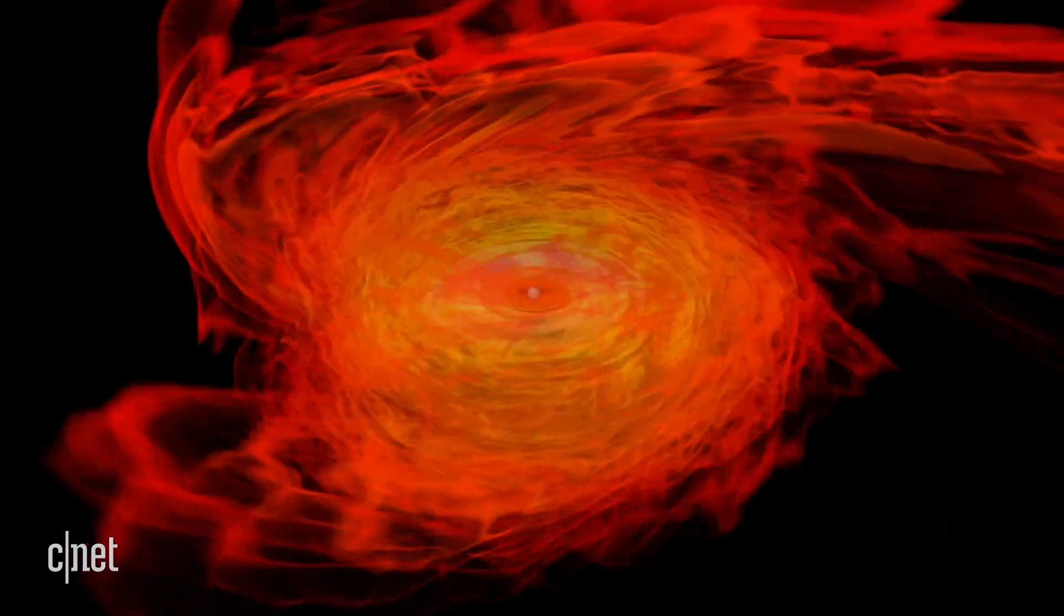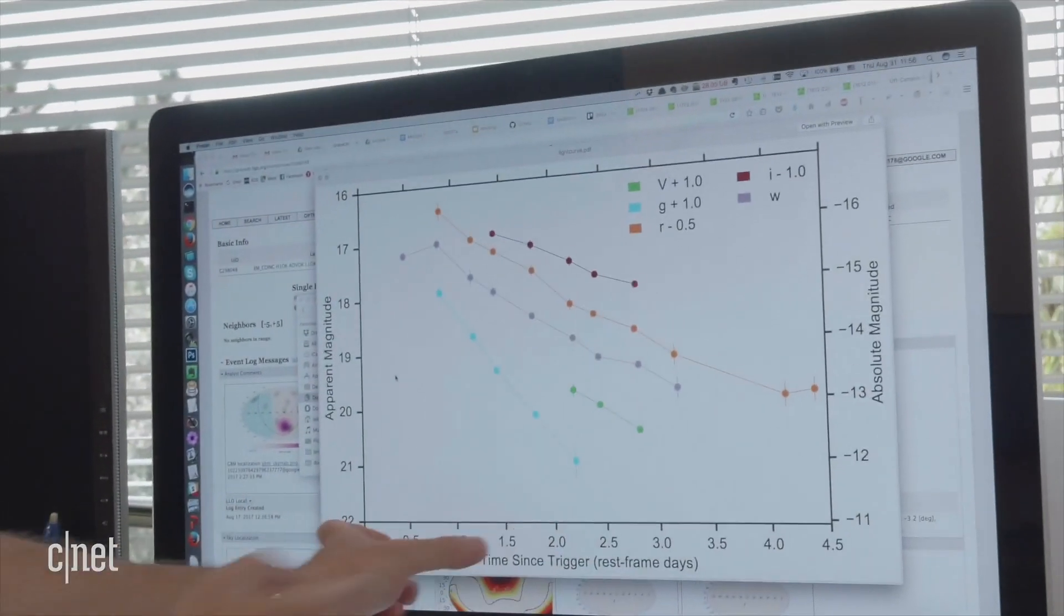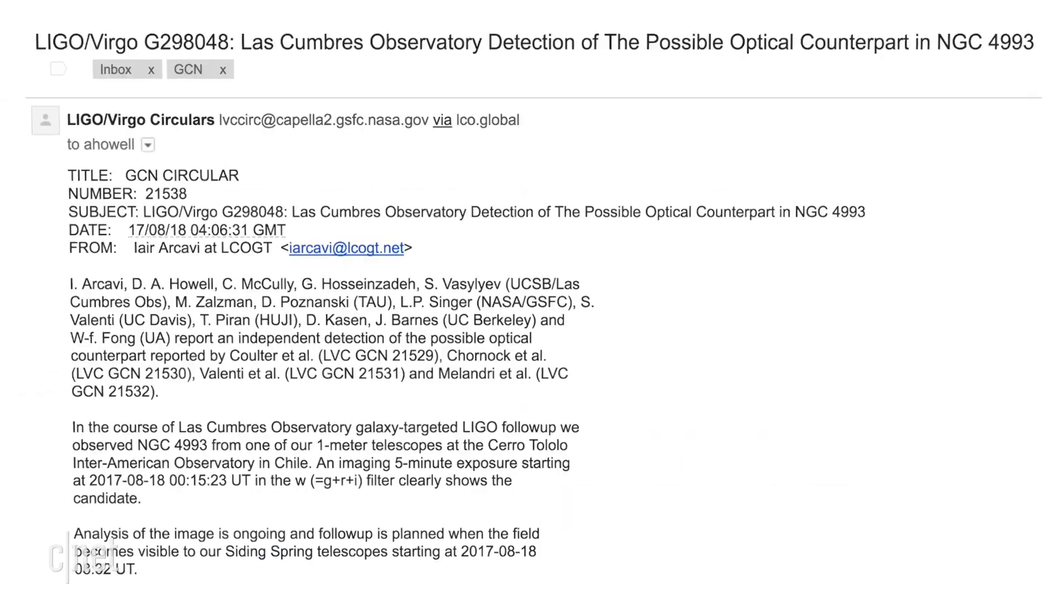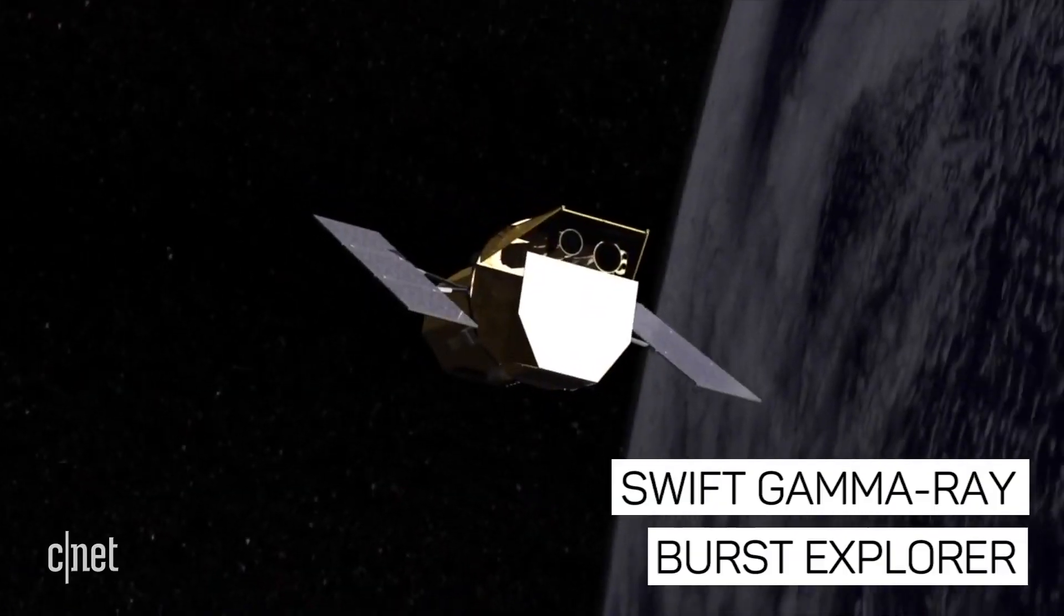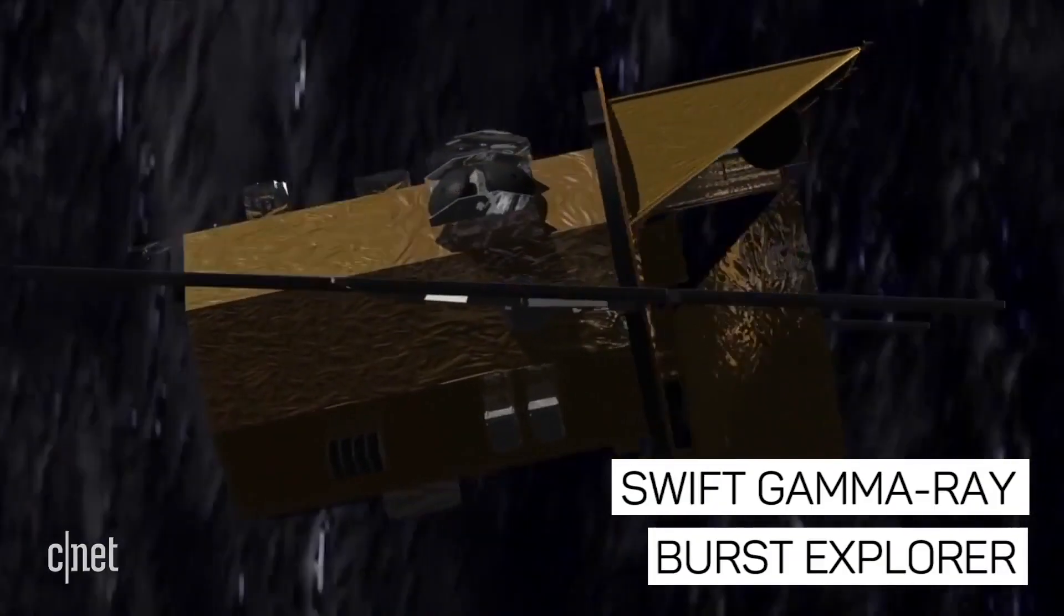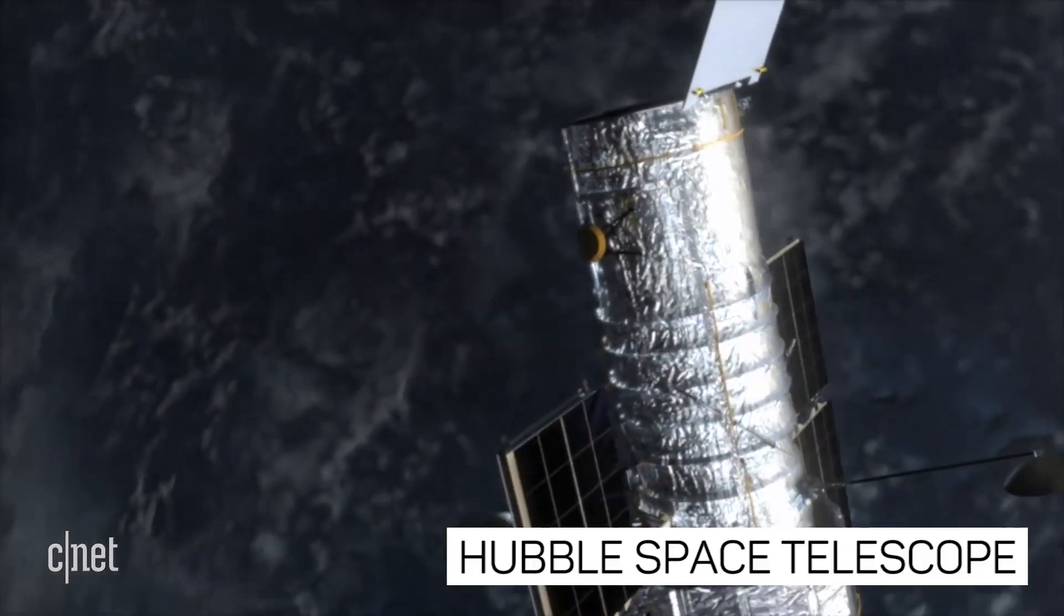The kilonova was only observable for a short time, but astronomers from all over the world began sharing information and utilizing other space telescopes like NASA's Swift gamma ray satellite and the Hubble Space Telescope to view the event from space.